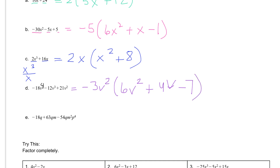Then we check: negative 3v squared times 6v squared is negative 18v to the fourth; negative 3v squared times 4v is negative 12v to the third; and negative 3v squared times negative 7 is positive 21v squared.